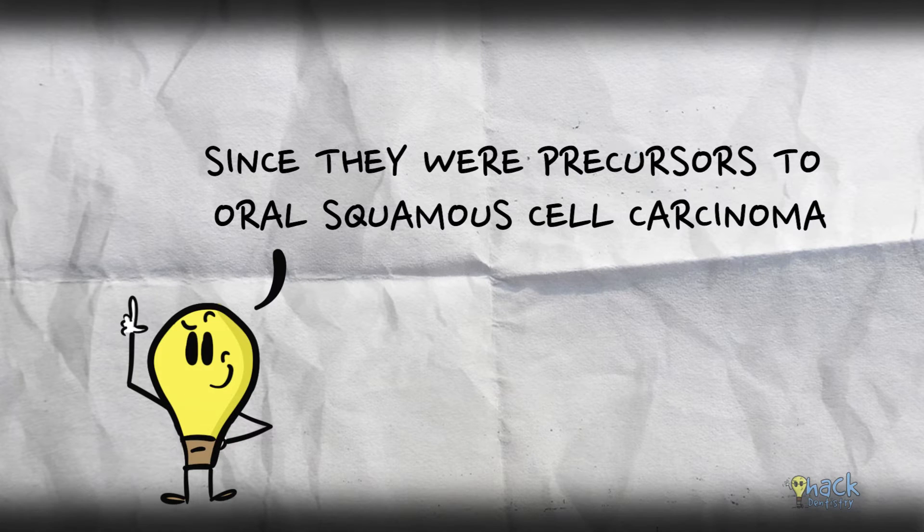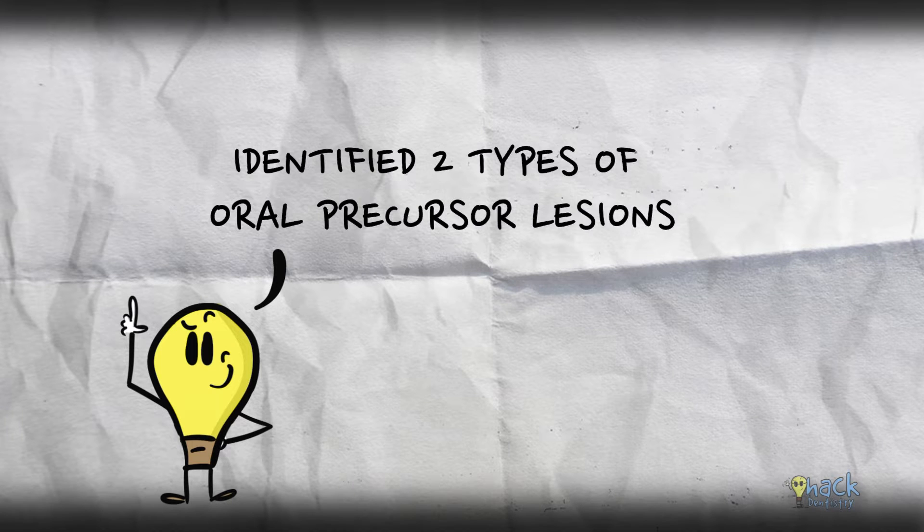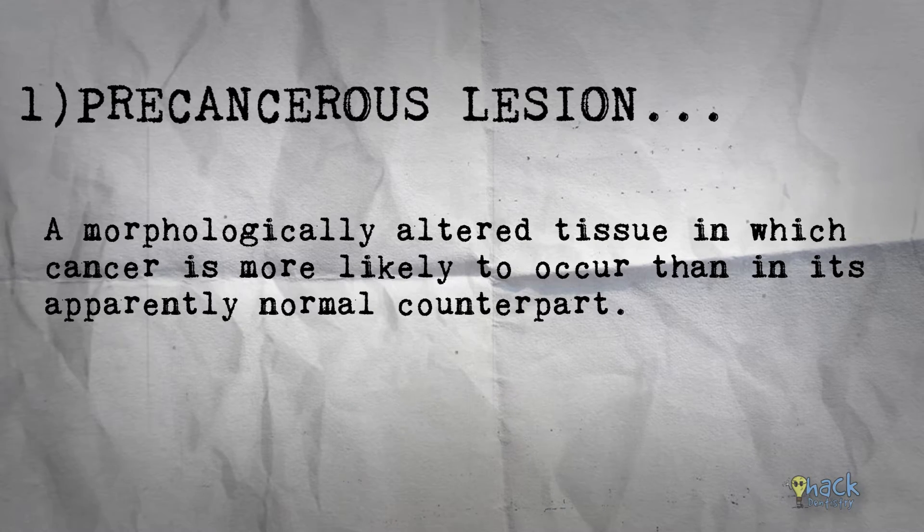Since they were precursors to oral cancer, the World Health Organization in 1972 identified two types of oral diseases. A precancerous lesion was defined as a morphologically altered tissue in which cancer is more likely to occur than in its apparently normal counterpart.